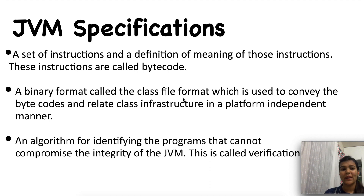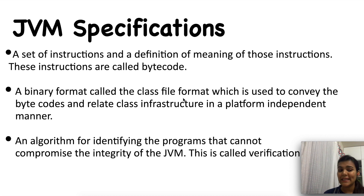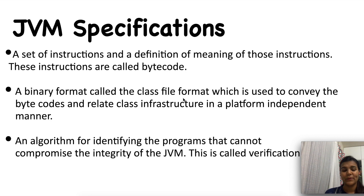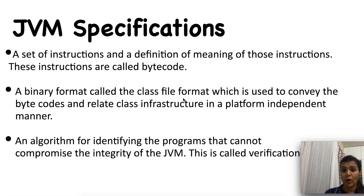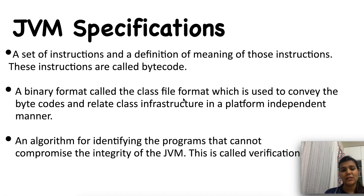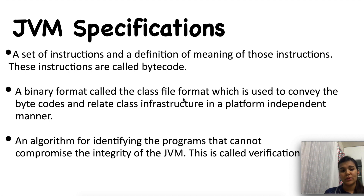It provides a set of specifications that you can see on your screen. One of which is a set of instructions and a definition of the meaning of those instructions — these instructions are called bytecode. A binary format called the class file format is used to convey the bytecodes and related class infrastructure in a platform-independent manner. Also, an algorithm for identifying programs that cannot compromise the integrity of the JVM — this is called the verification process.